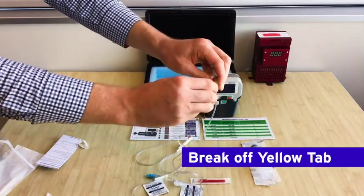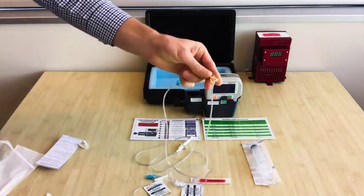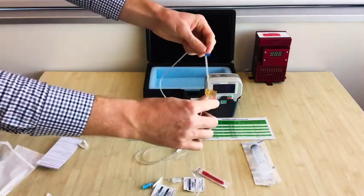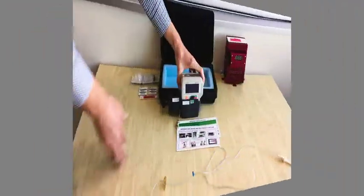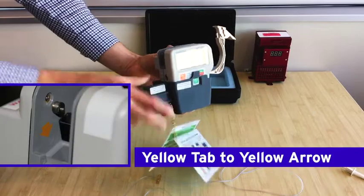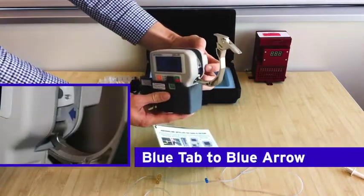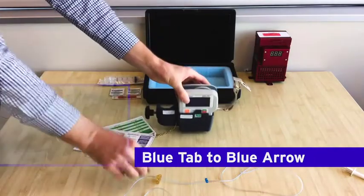Break off the yellow tab, and when you open the infusion pump arm, you want to line up the yellow tab with the yellow arrow inside the infusion pump, and the blue tab with the blue arrow on the other side.